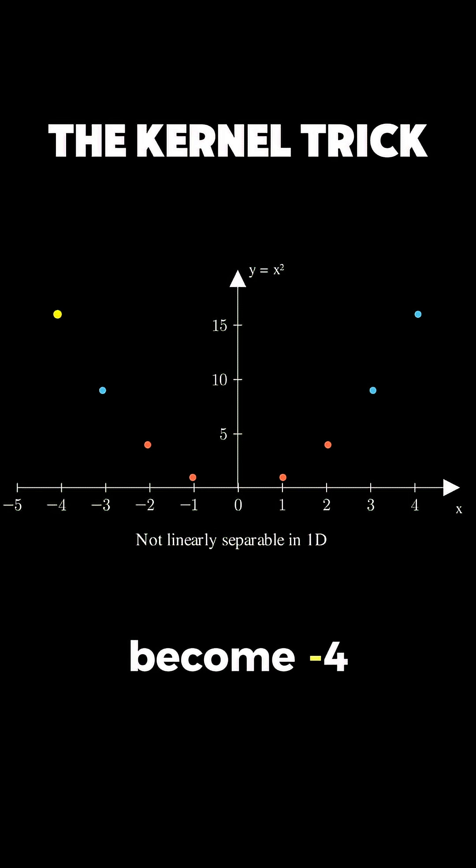Our blue points become minus 4, 16, minus 3, 9, 3, 9 and 4, 16, while our red points become minus 2, 4, minus 1, 1, 1, 1 and 2, 4.